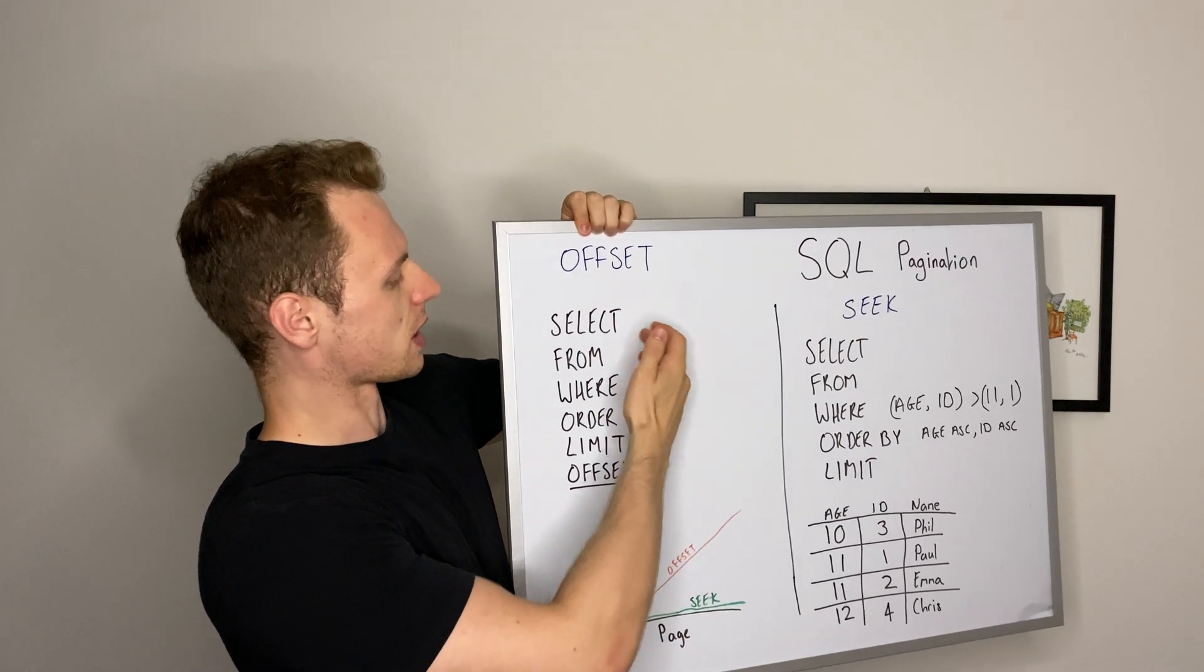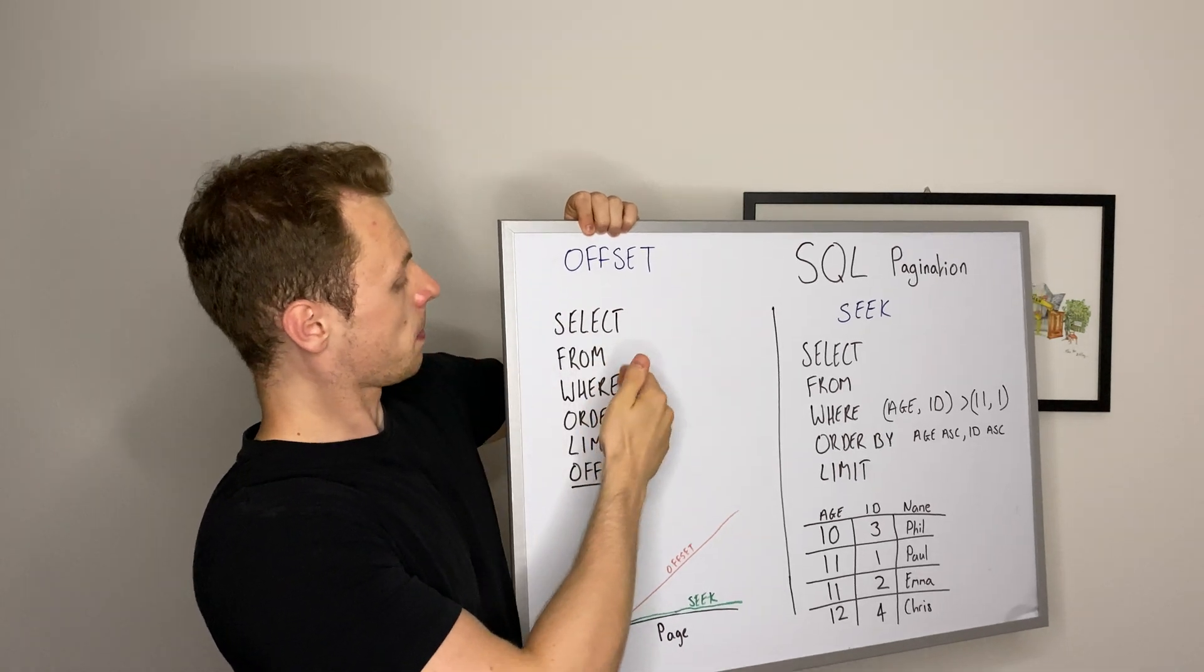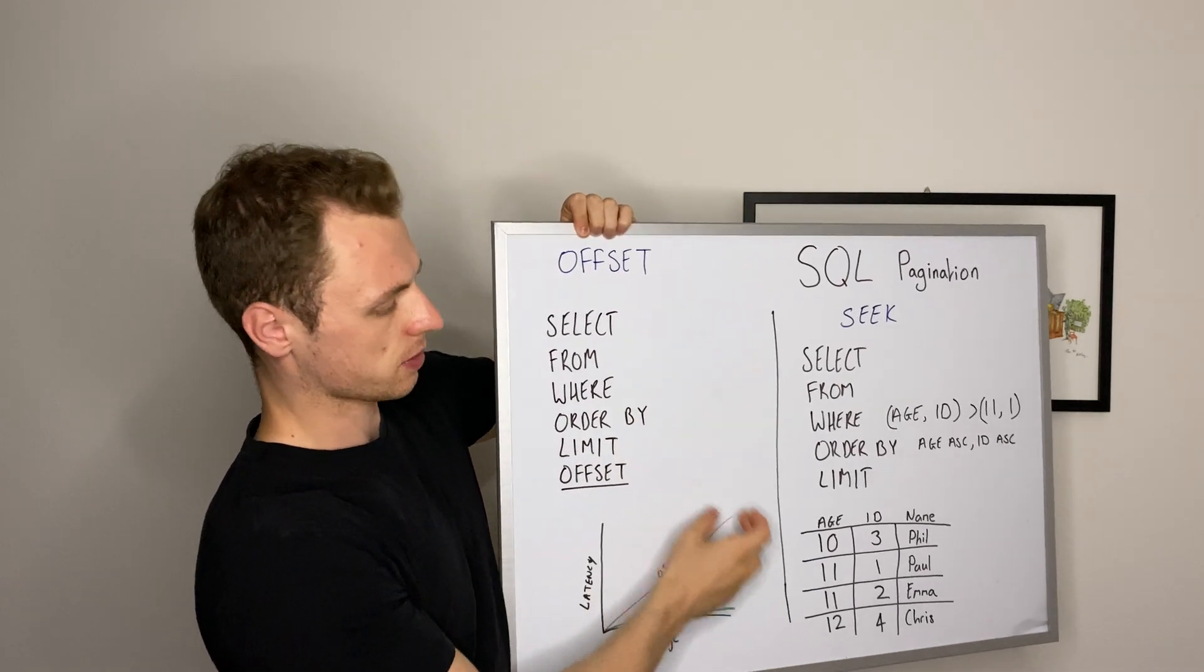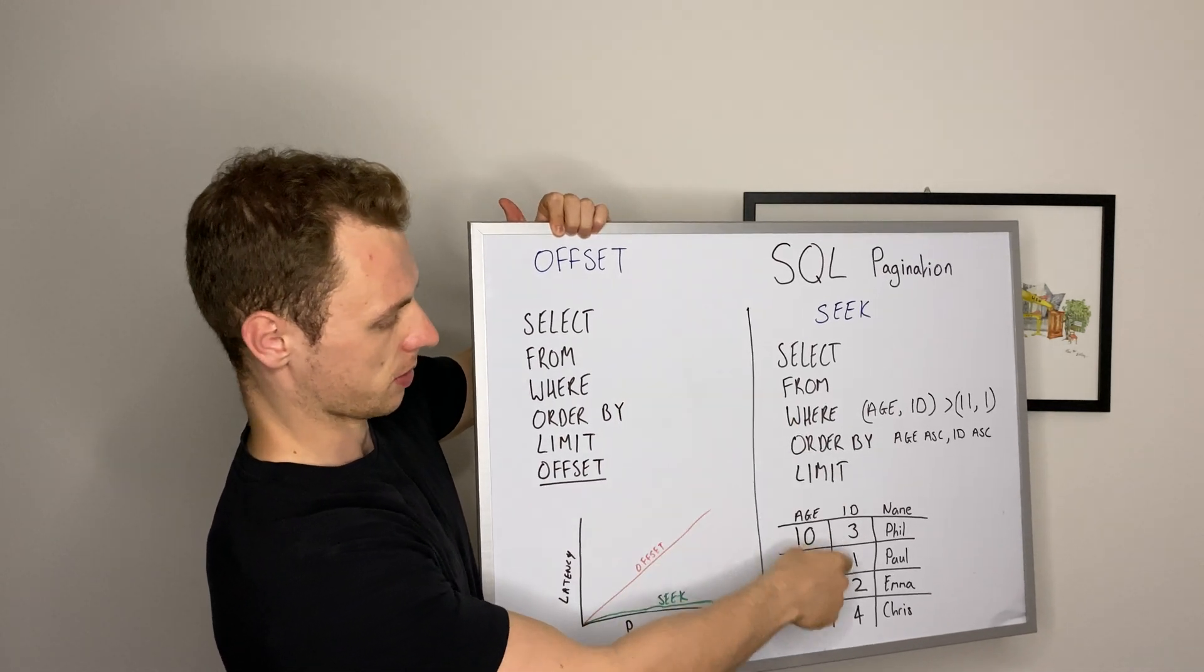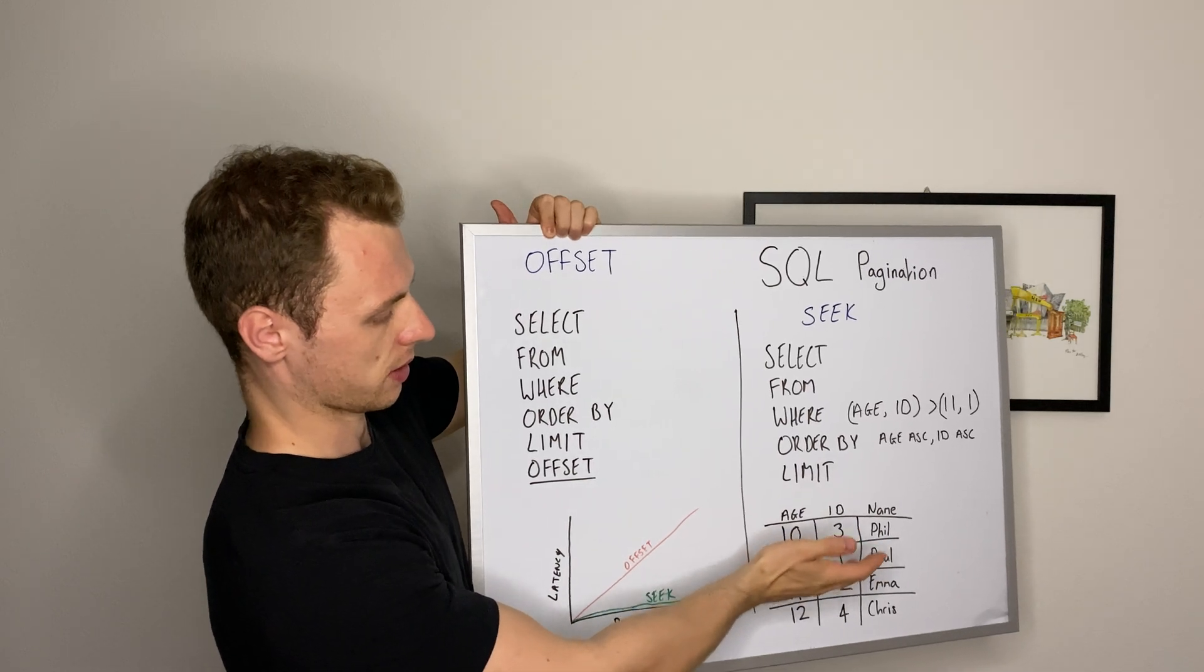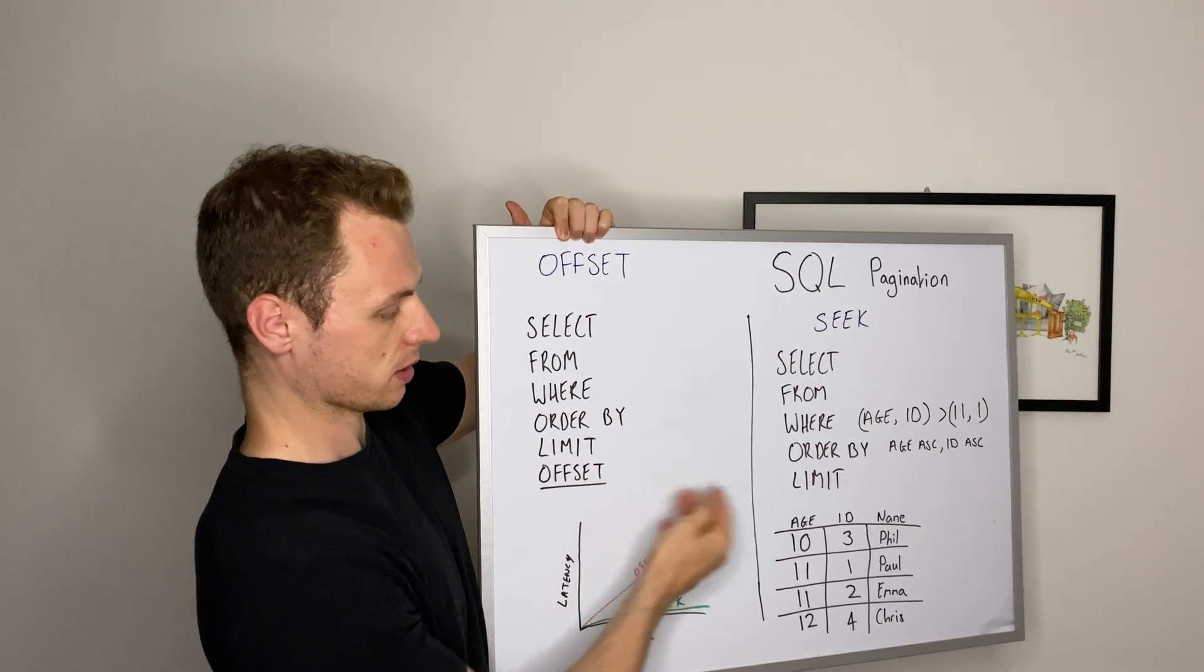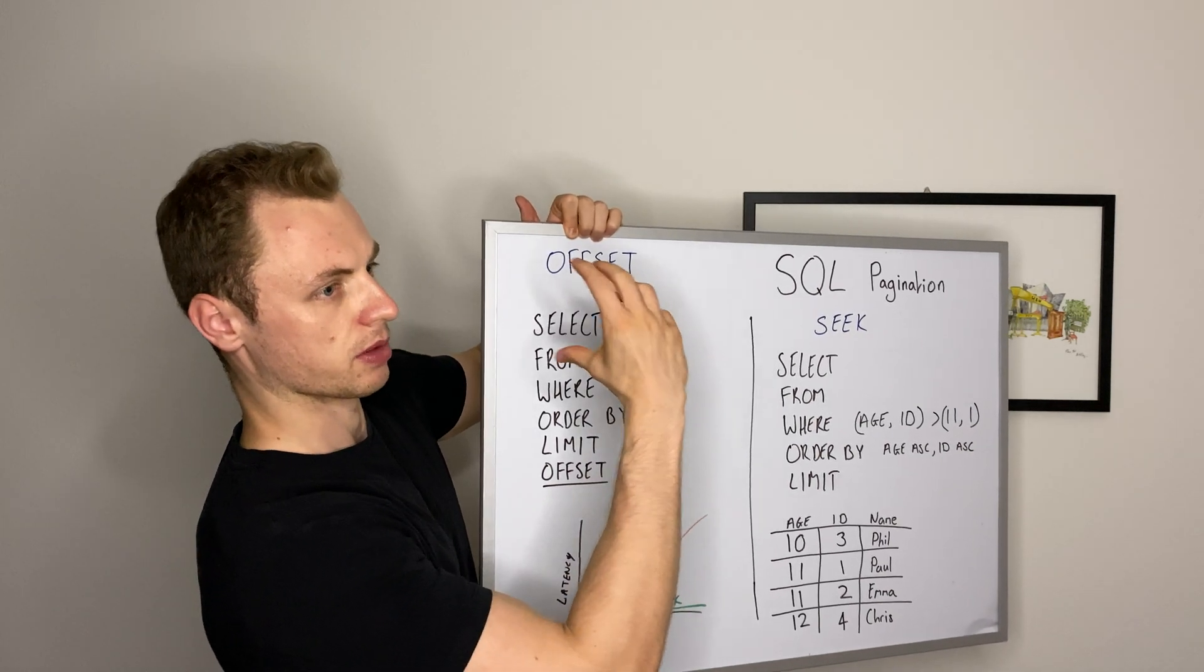What this basically is in a nutshell is you select from your database, of course the table where a certain condition is true, and then you order that by so it's consistent. So here you can say if I select age and ID from this table where age is greater than 11, order by age so it's asynchronous, then limit and then offset.